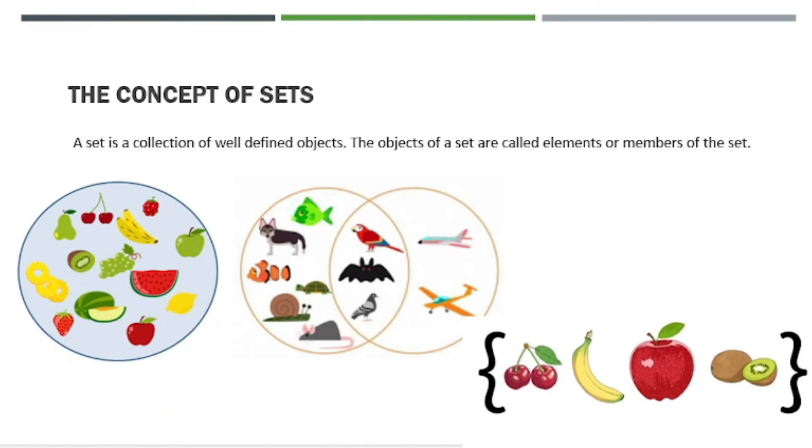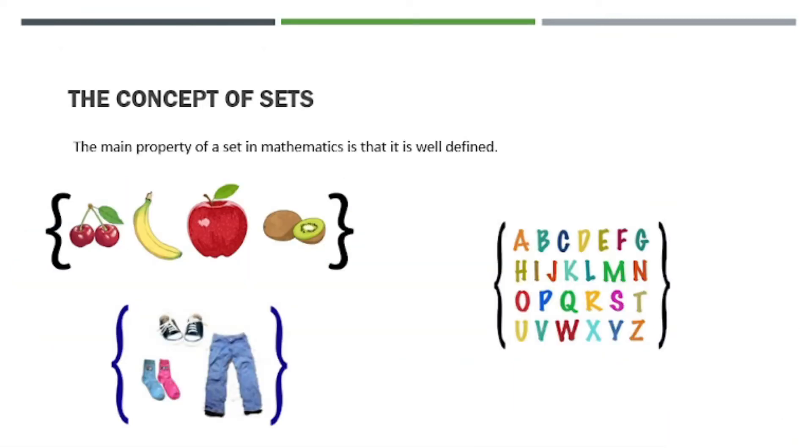The concept of a set: a set is a collection of well-defined objects. When we say well-defined objects, you know what those objects are and you know that they really belong in that group. The objects of a set are called elements or members of a set. Another concept of set: the main property of a set in mathematics is that it is well-defined, and the objects of all sets are all distinct.